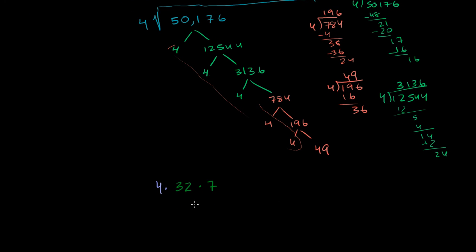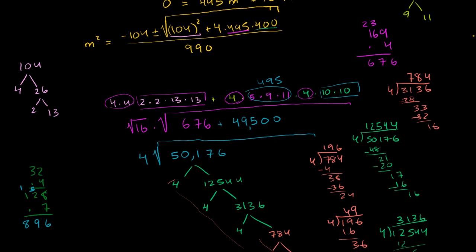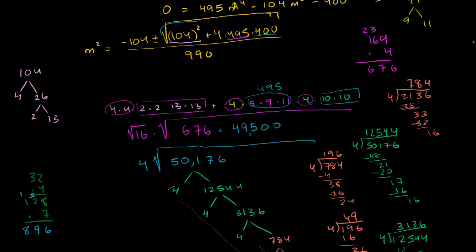This whole video has been just arithmetic. So 4 times 32 times 7: 4 times 32 is 128, times 7. 7 times 8 is 56, 7 times 2 is 14 plus 5 is 19, 7 times 1 is 7 — so it's 896. So all of that stuff in blue was 896. Now we have to decide if we do plus or minus. We want a positive slope, so we want to add the 896. So m squared equals negative 104 plus 896, giving us 792 over 990.